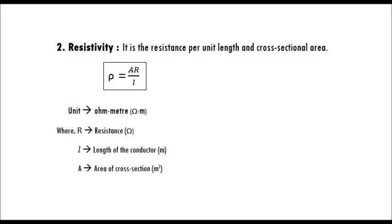Resistivity: it is the resistance per unit length and cross sectional area. The unit of resistivity is Ohm meter. It is given as rho equals A into R, whole divided by L, where R is the resistance, L is the length of the conductor, and A is the area of cross section.